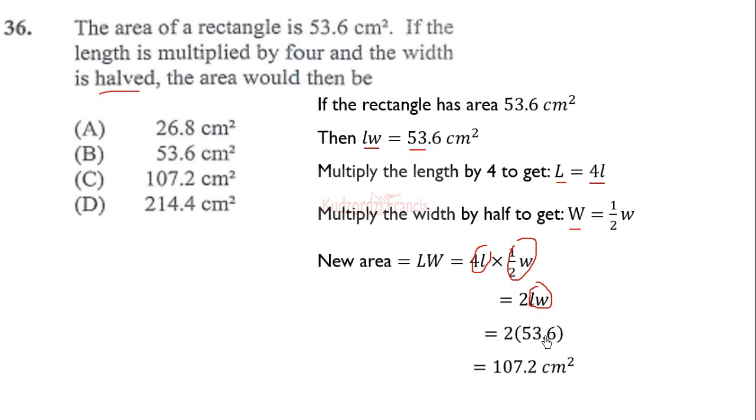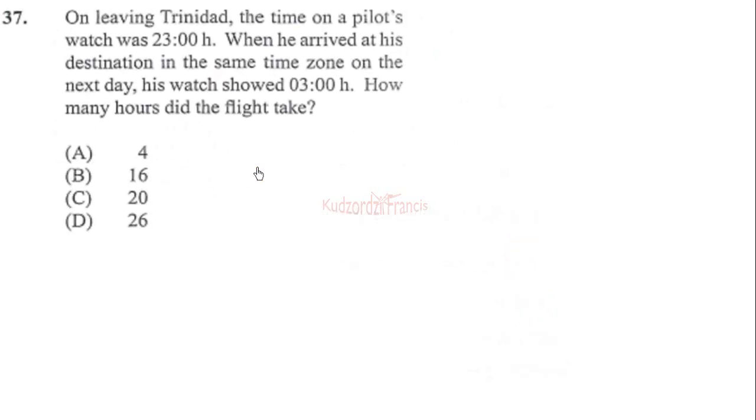Multiply by 2: 2 times 3.6 gives us 7.2, and 2 times 50 gives us 100. That gives us 100 plus 7.2, which is 107.2. You can use that trick to make multiplication easier. Therefore the right answer is option C, 107.2 square centimeters.